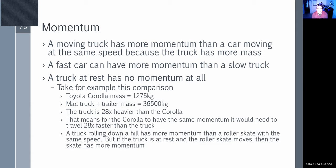If a truck is going one mile per hour, it has the same momentum as a Corolla going 28 miles per hour. A truck going downhill has more momentum than a roller skate at the same speed because it has more mass. But if the truck is at rest and the roller skate moves, the skate has more momentum — because even 36,000 kilograms at zero meters per second has no momentum. A rolling roller skate has more momentum than a parked car.